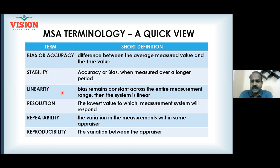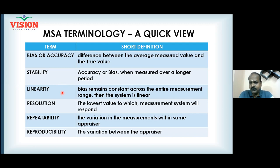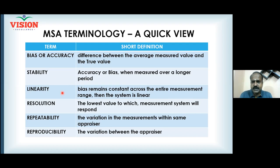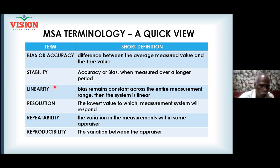Linearity refers to whether the bias remains consistent across the entire range of measurement. For example, weight may vary from 50 to 200 kg, dimensions from 50 to 500 mm, or current from 5 to 20 amperes. Is the bias the same over that entire measurement range? That is called linearity.